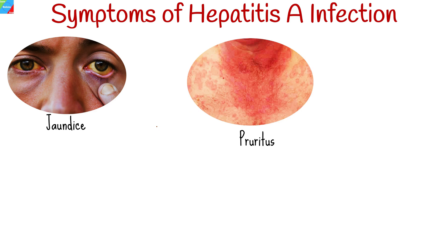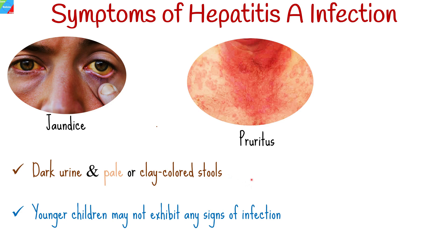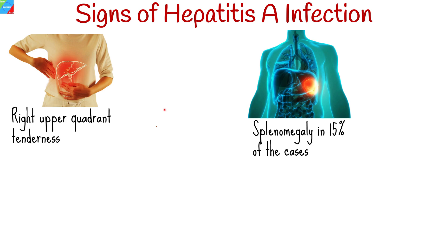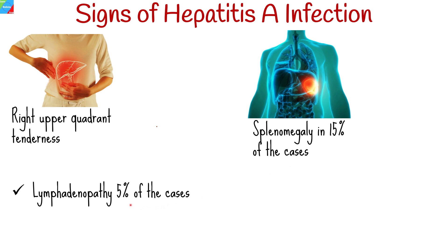Additional symptoms include pruritus, dark urine, and pale or clay-colored stools. Younger children may not exhibit any signs of infection; around 10% develop jaundice. Signs elicited by the physician include right upper quadrant tenderness, jaundice, hepatomegaly or enlargement of the liver in about 85% of cases, splenomegaly in 15% of cases, and lymphadenopathy in about 5% of cases.